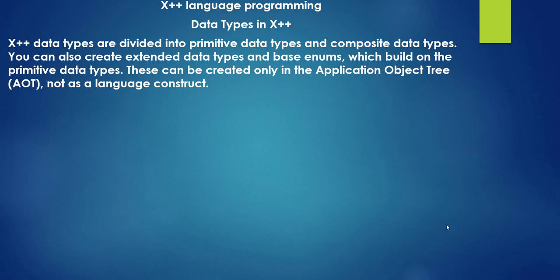Data types in X++ programming language. X++ data types are divided into primitive data types and composite data types. You can also create other data types like extended data types and base enums in X++.